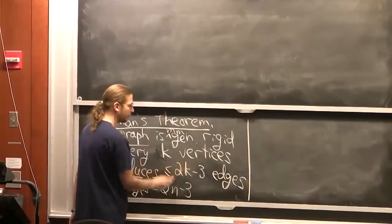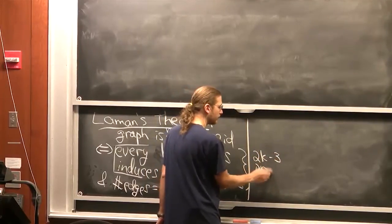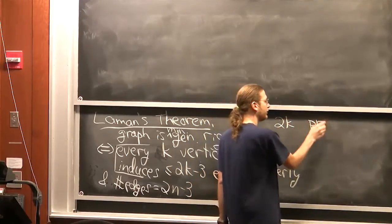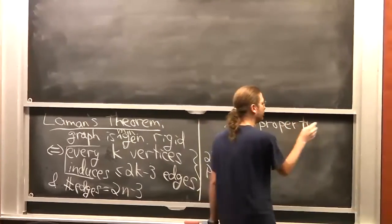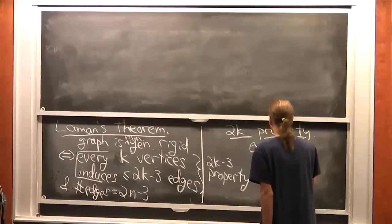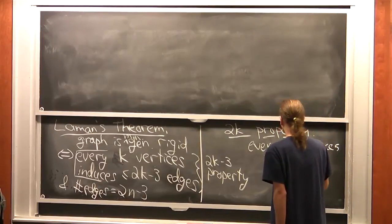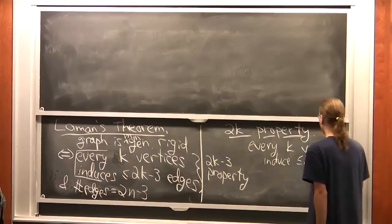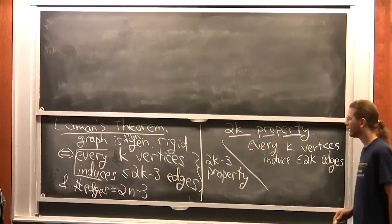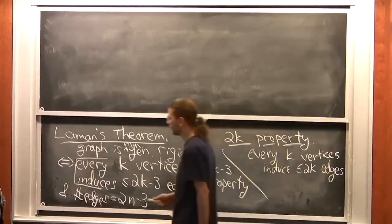The tricky part is checking whether every k vertices induces at most 2k minus 3 edges, because there are exponentially many choices — 2 to the n different subsets of vertices. The algorithm needs to check this 2k minus 3 property efficiently. We'll warm up with a simpler problem: checking the 2k property, without the minus 3, then modify the algorithm to handle 2k minus 3.